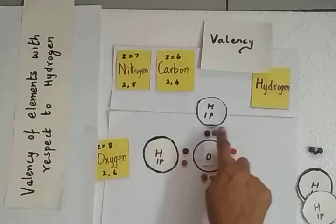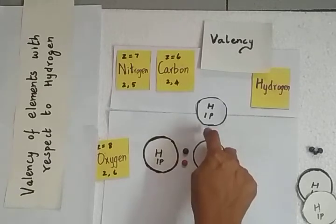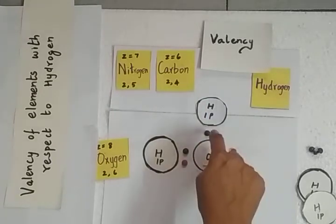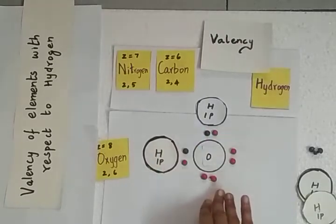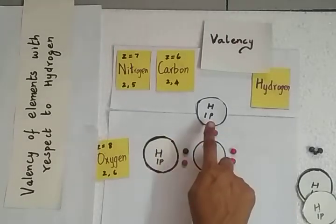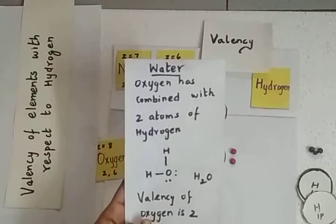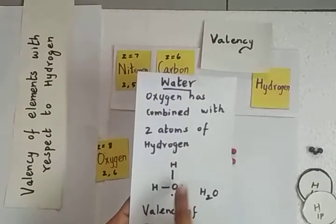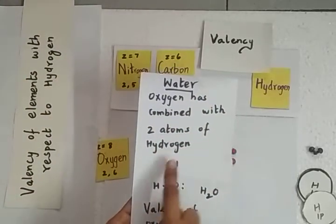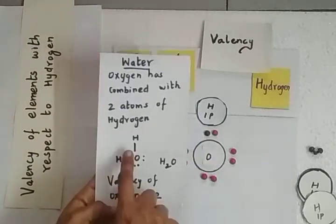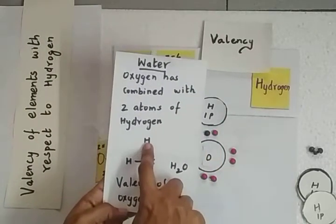We have the octet configuration for oxygen, as well as each hydrogen with 2 electrons in its K shell. This is the molecule formation where oxygen is combined with 2 atoms of hydrogen, so the valency of oxygen is 2. The compound formed is water, and the 2 shared electron pairs are represented with single bond lines.